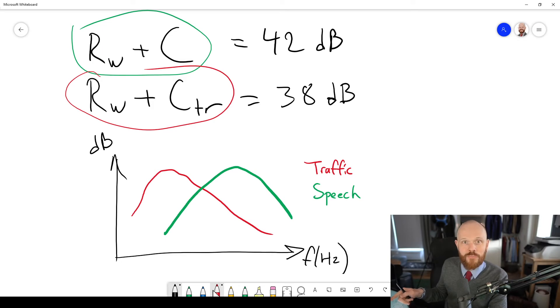If you accidentally mix them up and you state the requirements as RW plus CTR, well, then you're on the safe side at least, because if it was supposed to be this green one, but you accidentally wrote CTR and then the requirement is 42 CTR, then you will have at least 42 RW plus C, probably, and you're on the safe side.